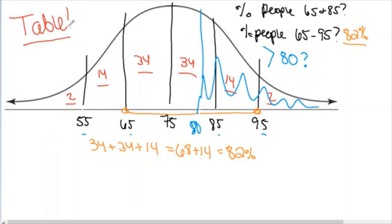We'll learn how to read the normal distribution table to answer questions about any score, like what percentage of drivers go above 80 miles per hour. For now, start thinking generally about what number you'd expect — we know it includes the 2%, the 14%, and part of the 34%, so it should be somewhere above 16% but less than 50%. The table will give us the exact answer, because calculus majors have done all the math for us.